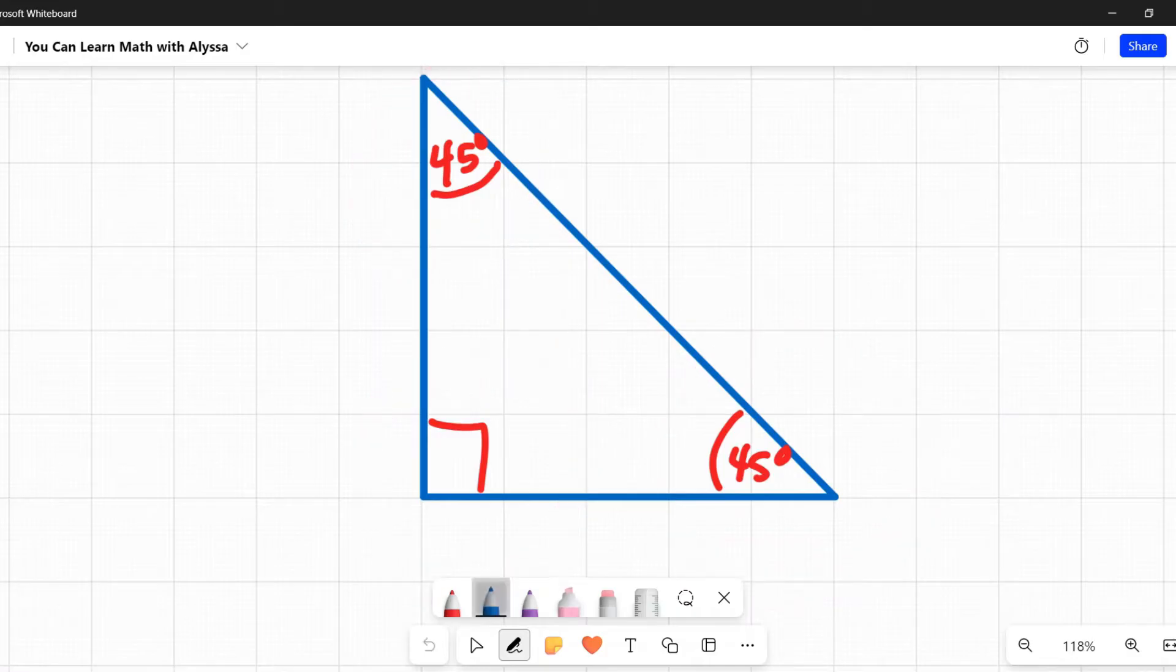These triangles follow a certain pattern that we get from the Pythagorean theorem, a² + b² = c², and they will want you to memorize this pattern.